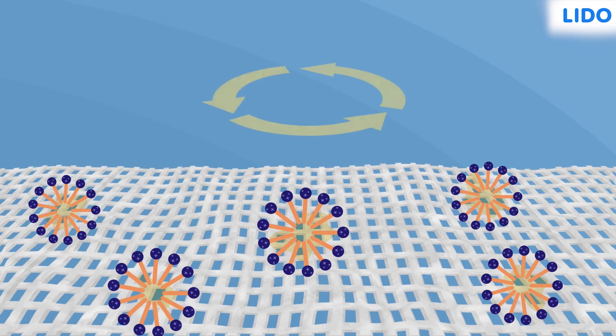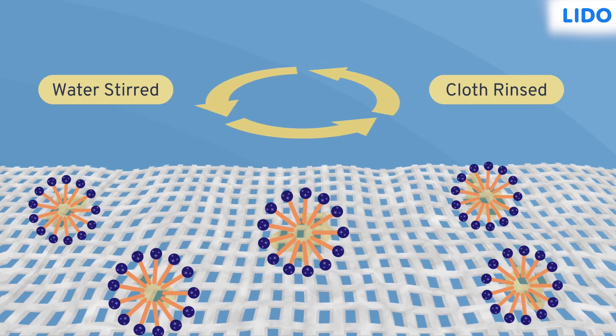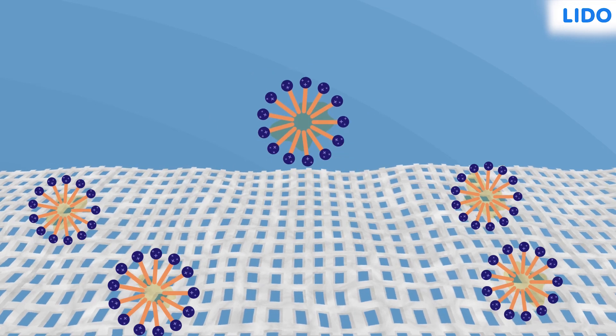Now, when the water is stirred and the cloth is rinsed, these micelles are lifted off. The stain too is loosened.